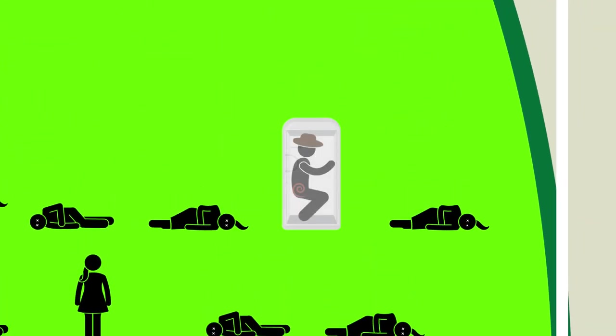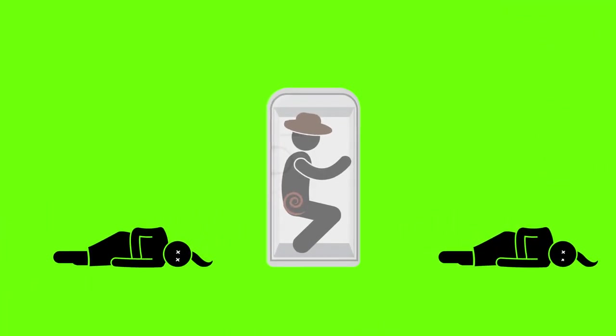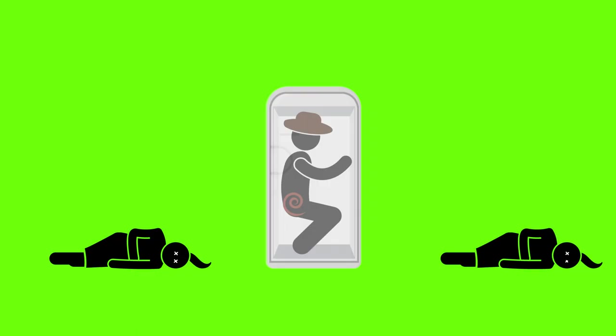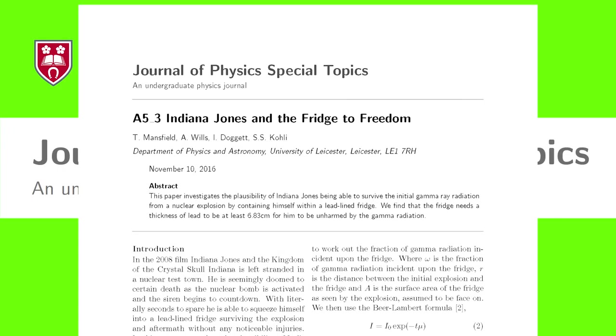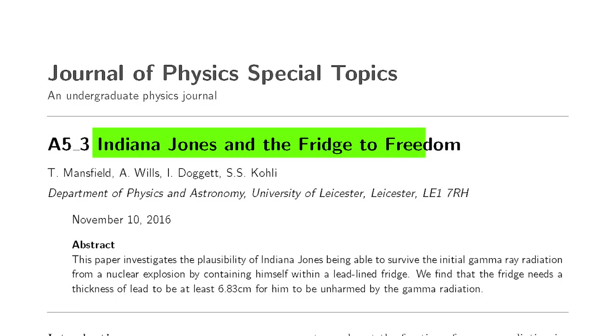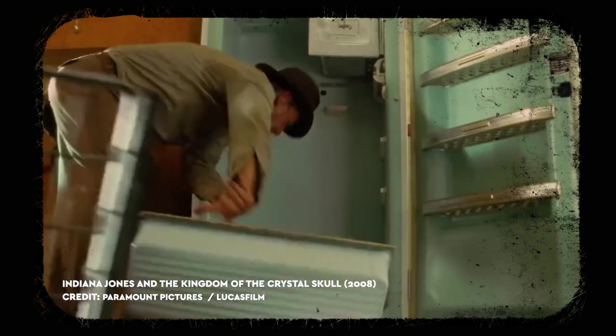But if the freezer kept the food safe, then maybe you'd think the lead-lined fridge would have done the same for Indiana Jones. Well, think again. A 2016 entry in the Journal of Physics Special Topics, titled Indiana Jones and the Fridge to Freedom.